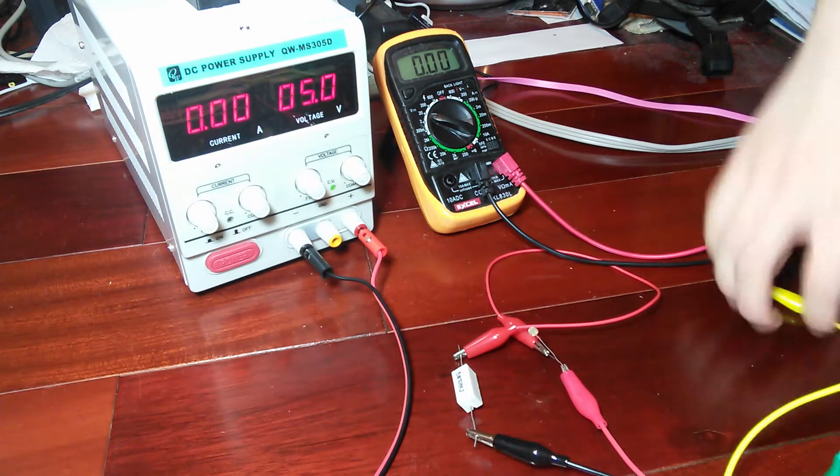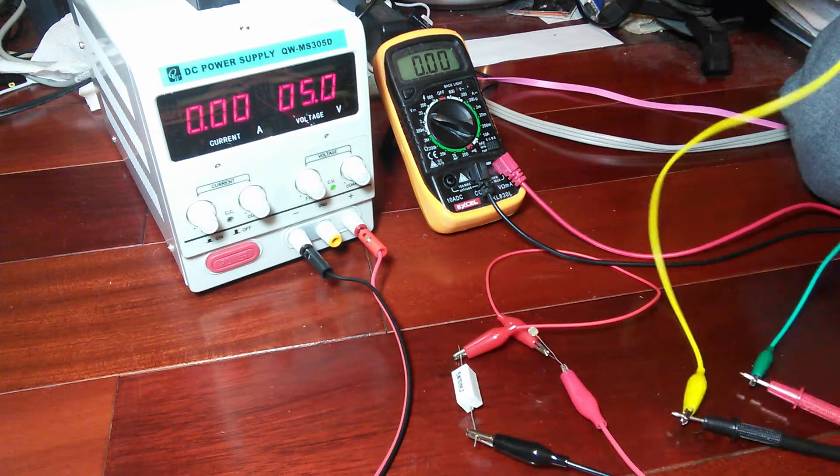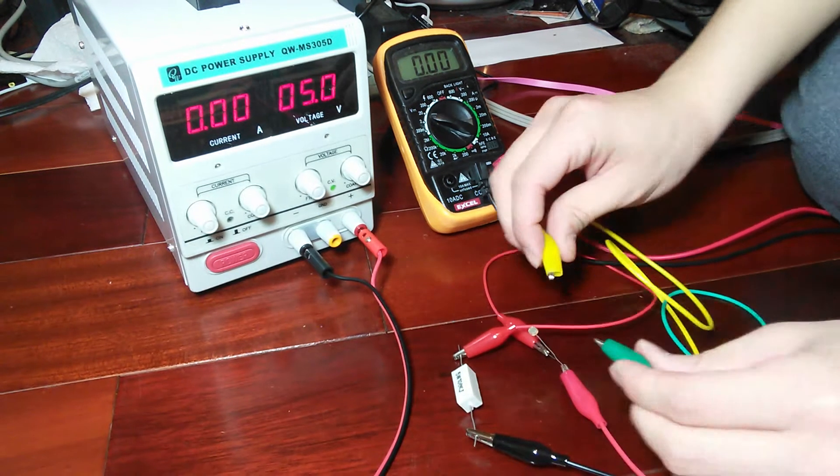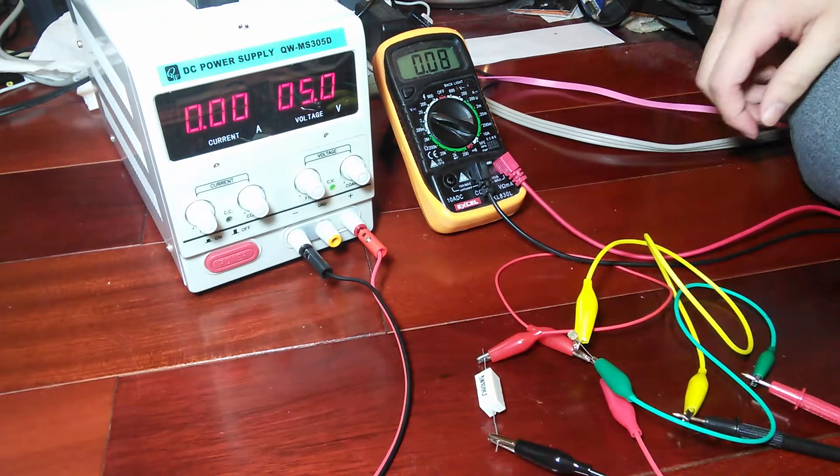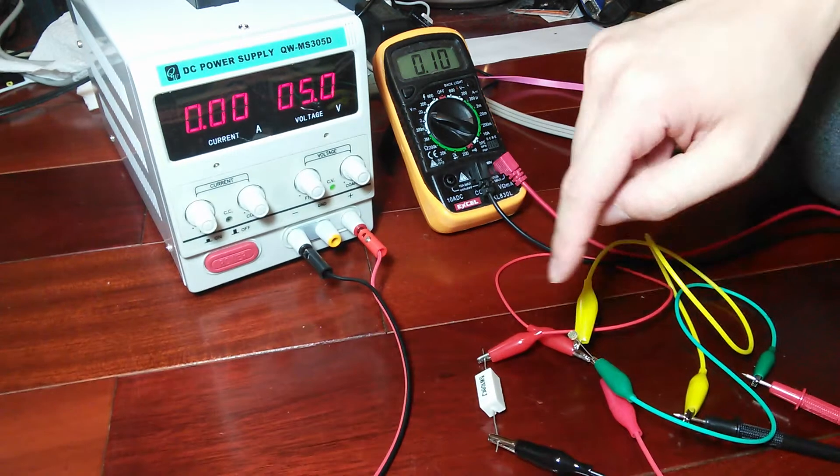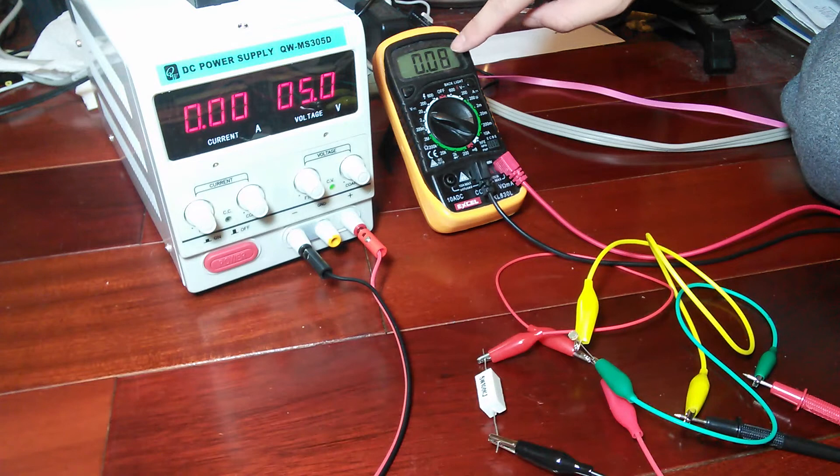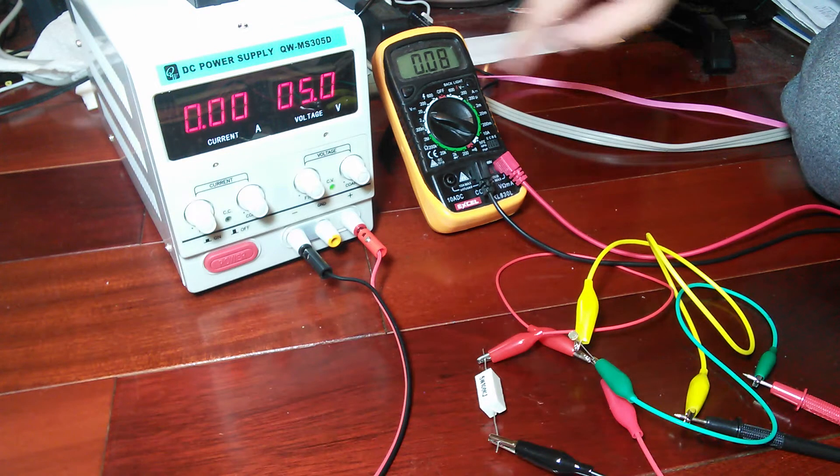It doesn't matter which one I do, really. We're going to do the light-dependent resistor first. And you can see, right now, the voltage drop across the light-dependent resistor is about 0.08 volts.